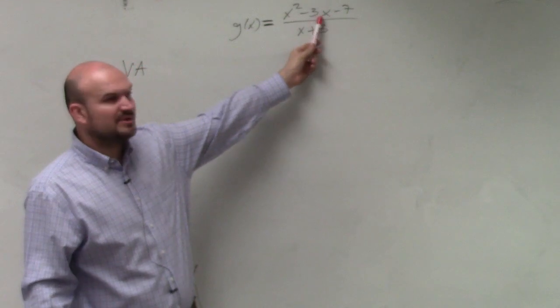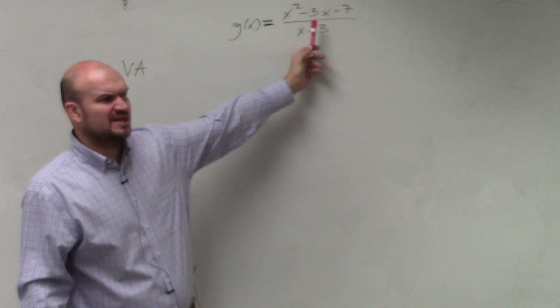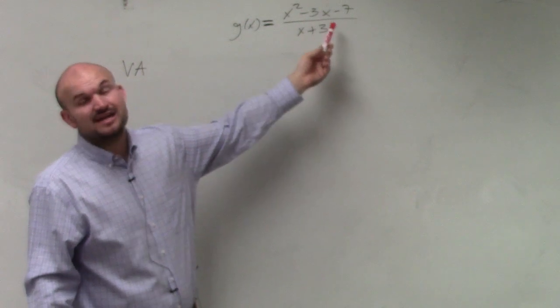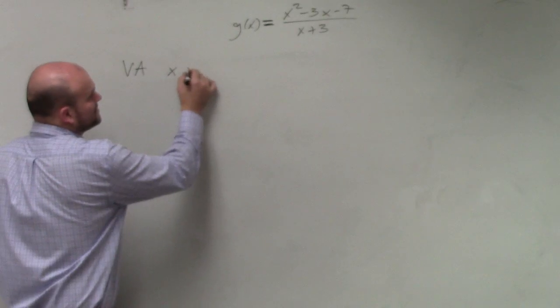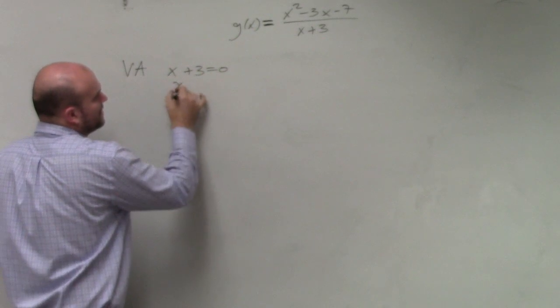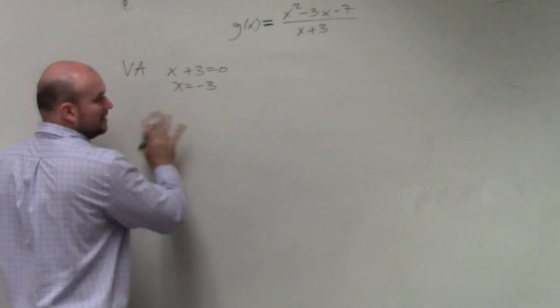However, is there anything that we can multiply to give us negative 7 that's going to add to give us negative 3? No, so that's not factorable. So I know, obviously, that's not going to divide out. So my vertical asymptote is just x plus 3 equals 0. So x equals negative 3. Done.